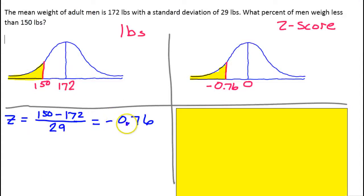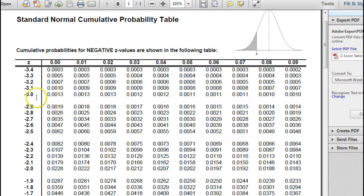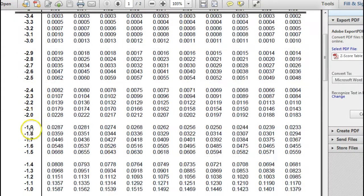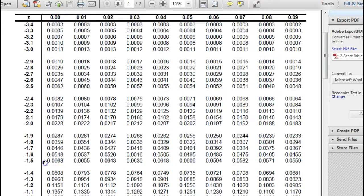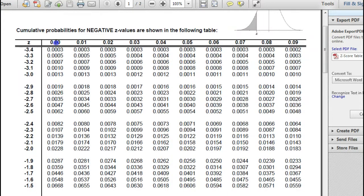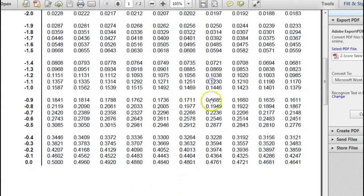We want negative 0.76. Negative 0.7 is right here. Now we can't see these, but this is 0.70, 0.71, 0.72, 0.73, 0.74, 0.75, 0.76. So this is the column that we're going to be wanting.